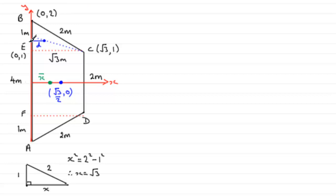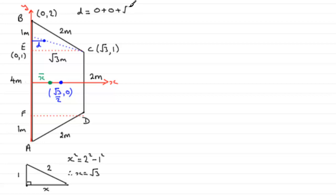The X coordinate D of the center of mass equals the mean of the X coordinates: (0 + 0 + root 3) divided by 3, which is root 3 over 3. This is the same for both triangles — the one at the top and the one at the bottom.